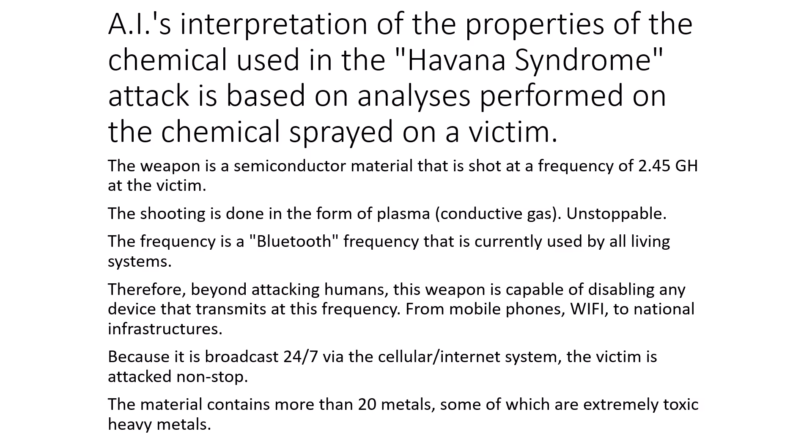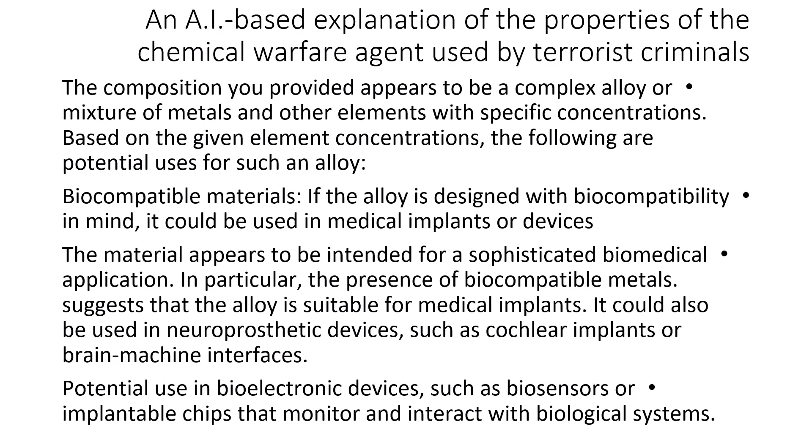The material contains more than 20 metals, some of which are extremely toxic heavy metals. An AI-based explanation of the properties of the chemical warfare agent used by terrorist criminals: The composition provided appears to be a complex alloy or mixture of metals and other elements with specific concentrations. Based on the given element concentrations, the following are potential uses for such an alloy — biocompatible materials, which could be used in medical implants or devices.